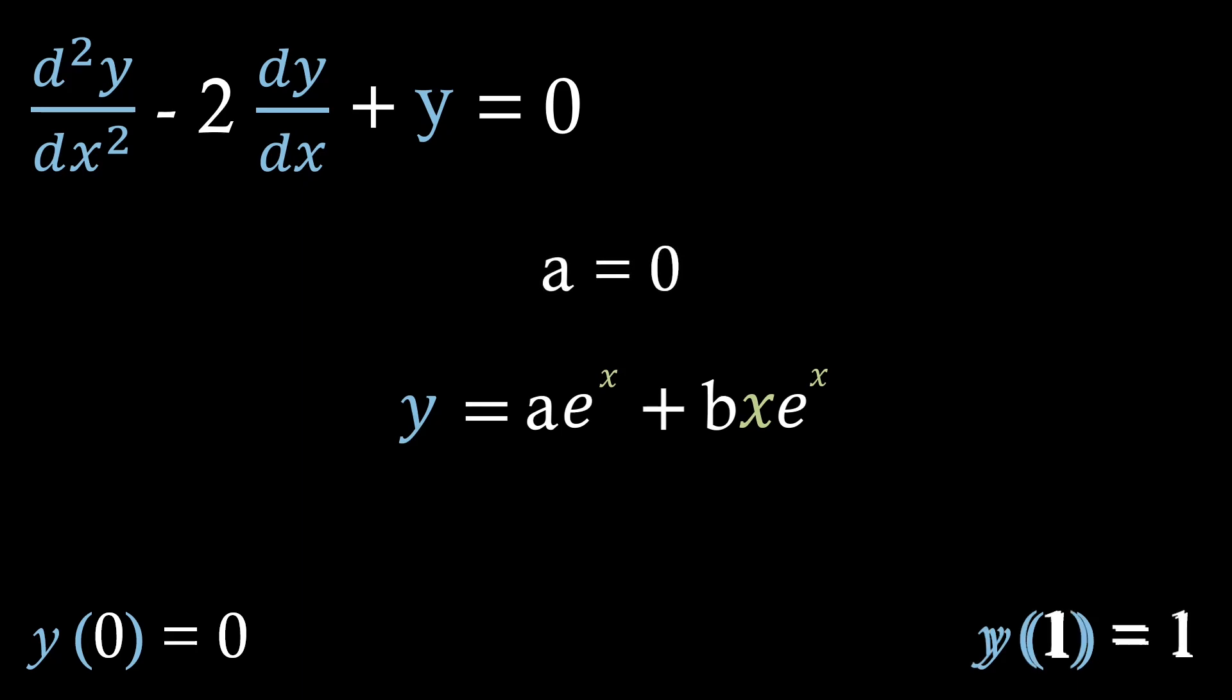Then if we just apply our second initial condition, we find this expression, which we can see that just simplifies down to a times e plus b times e equals 1. But we just found that a equals 0, so we can input that value there to find that b times e must equal 1. Consequently, meaning that b must equal 1 over e, or e to the minus 1.